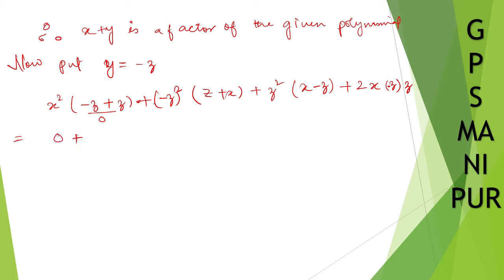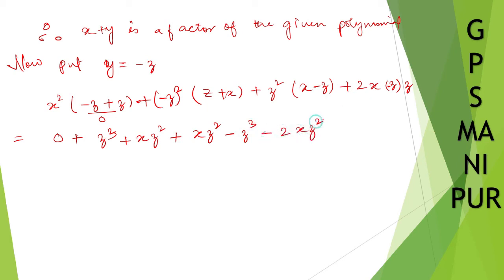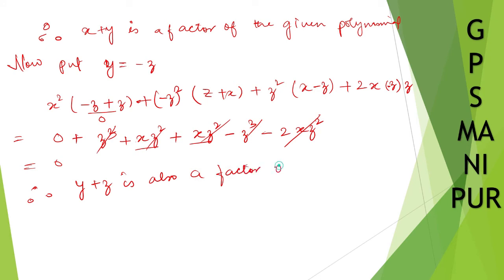So we write down: minus z squared times z gives minus z cubed, plus z squared into x gives plus xz squared. Then plus z squared times x gives xz squared, and minus z squared into minus z gives plus z cubed, and minus 2xz squared. So z cubed and minus z cubed cancel, and xz squared and minus 2xz squared cancel out. The result is 0, so y plus z is also a factor of the given polynomial.